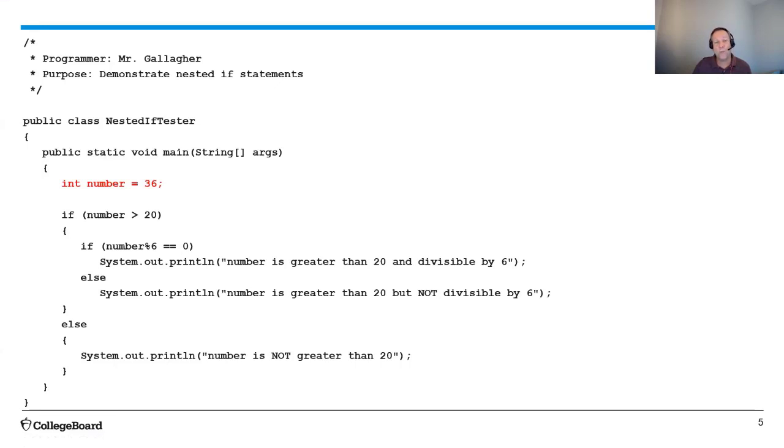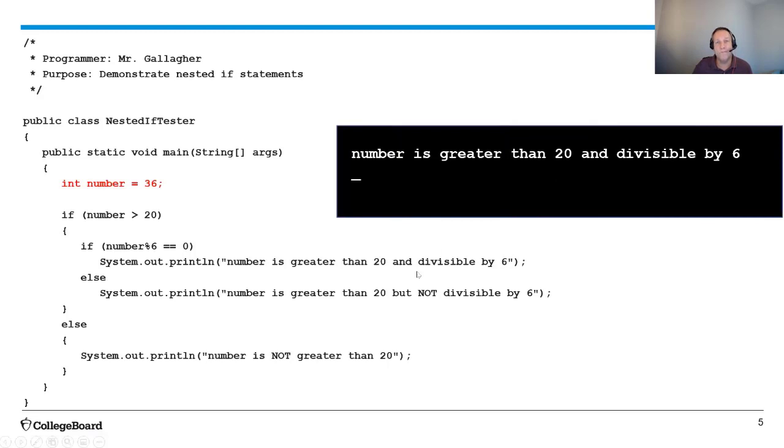So then it goes inside the curly braces to my second if statement. And here I'm looking to see if number mod six equals zero. Basically, I'm checking to see if number is divisible by six. It is. So it's going to go to this first print statement and it's going to print out number is greater than 20 and divisible by six. Great. So that's an if statement inside of another if statement.